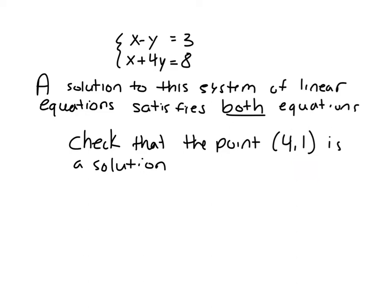So if we were to check that that is a solution, what we would do is first we would plug in the point (4, 1) into equation one. So this would be 4 minus 1 and that equals 3. So that's good. And then we would check the second equation. I would type in 4 for x and 1 for y. Four plus four is eight. So that's correct.